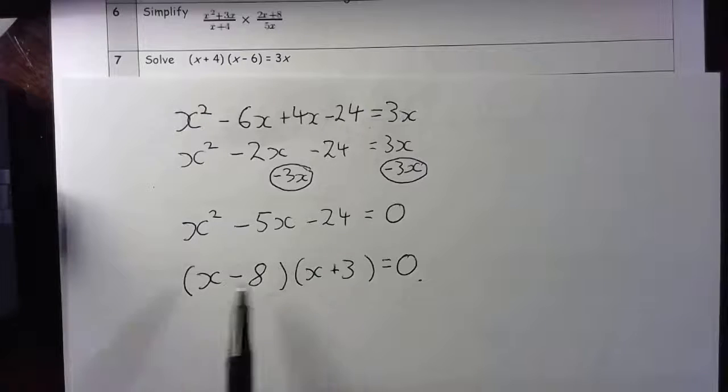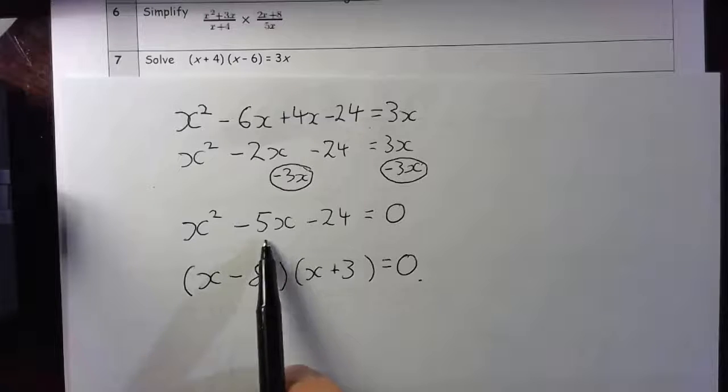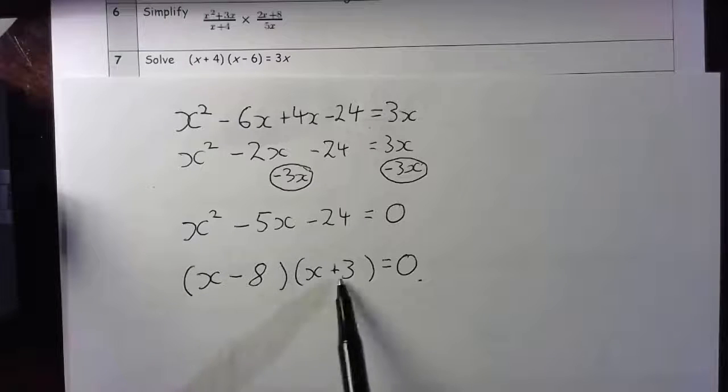So I need it to be minus 8 and plus 3, because that will give me x squared plus 3x, but then minus 8x takes me to minus 5x, and then minus 24 when I multiply minus 8 and plus 3. So that's the correct factorization: (x - 8)(x + 3) = 0.